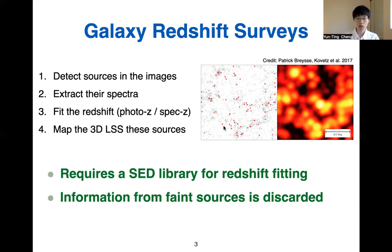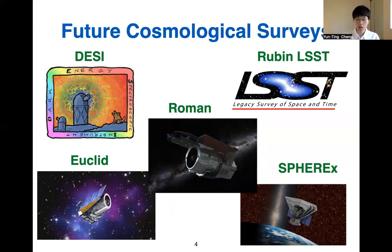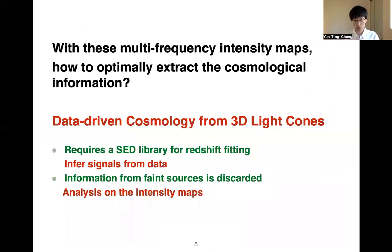This is not the optimal way to use all the information we have in the data. Especially in the coming years, we'll have data from next-generation cosmological surveys that will give us very nice large-scale images of the sky in many different frequencies. So we should start thinking about how, with these multi-frequency imaging maps, we can optimally extract cosmological information beyond doing the traditional galaxy redshift survey that detects individual sources. That's the motivation of our work.